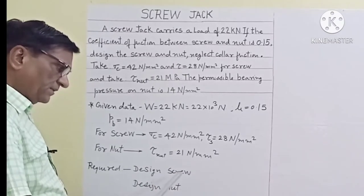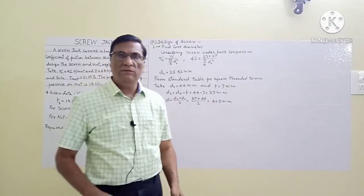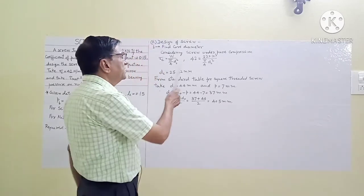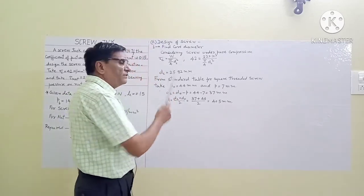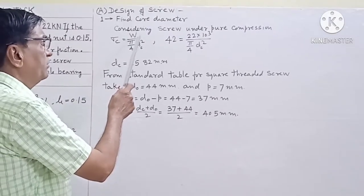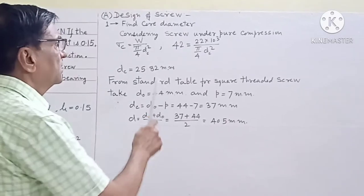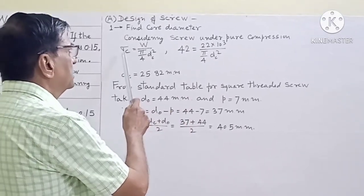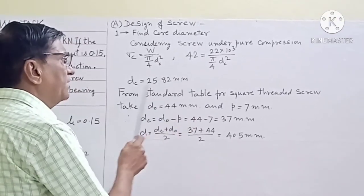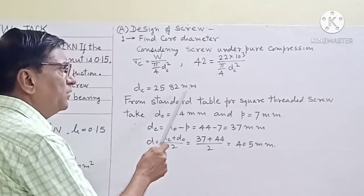Required: design the screw and design the nut. The first step is to find the core diameter of the screw considering pure compression. The strength equation in pure compression is σC equal to W upon (π/4)·DC². Putting in the values of σC and W, the core diameter DC comes out to be 25.82 mm.